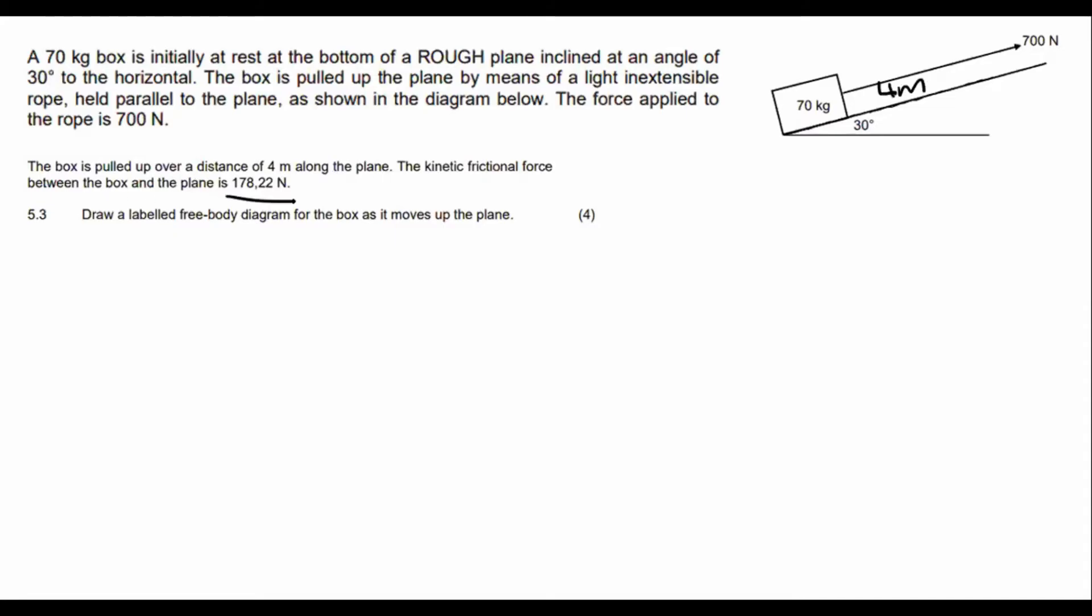The kinetic friction force between the box and the plane is 178.22 newtons. Okay, this is actually quite an easy question. Usually, they don't give us all of this. Draw a labeled free body diagram for the box as it moves up the plane.